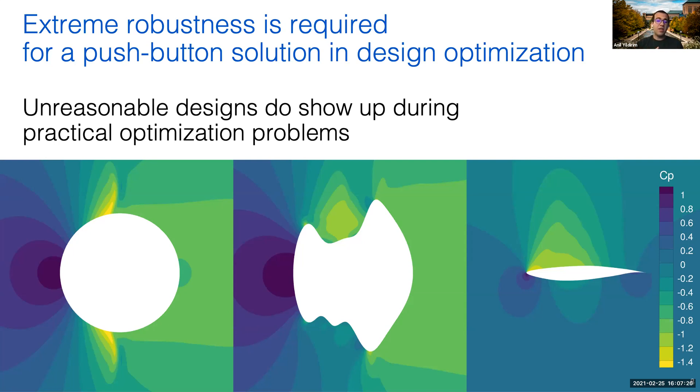One of the weak links in this chain is the CFD solver, where these solvers can fail with challenging cases that have blunt features like we see here. To address this robustness issue, I worked on an Approximate Newton-Krylov, or ANK solver, in our open-source CFD code ADflow.